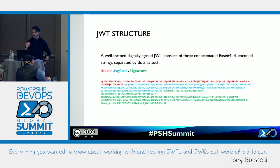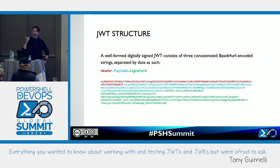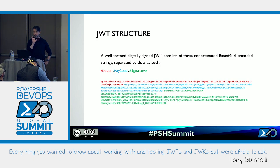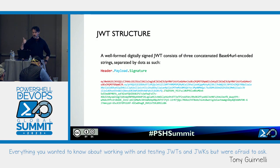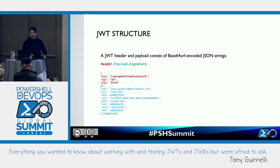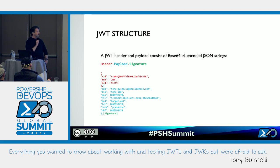If we take apart what a JWT is, a JWT has three parts: header, payload, and signature. The header denotes cryptographic information as to how the token was signed — which is the single most important part of this presentation. Anytime we have a JWT on screen, draw your eyes to the header. The header is in red, the payload is in blue, and the signature is in green. When we decode the header and the payload, we have two JSON blocks. The header shows a key identifier — the key that was used to sign it — and the algorithm, in this case RSA SHA-256, meaning it's an asymmetrically signed token.